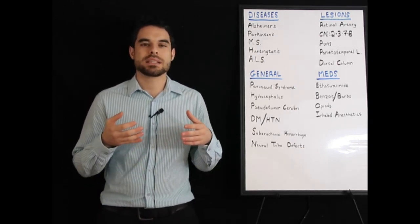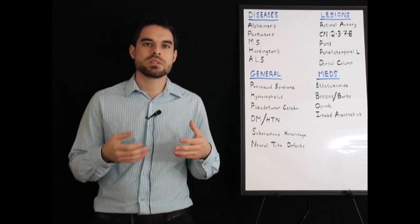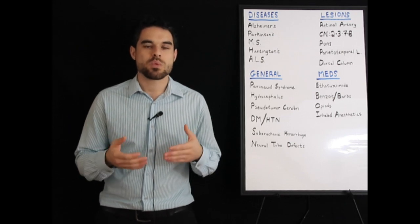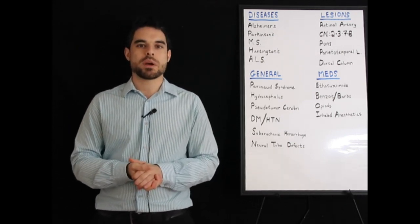They have less staining in the substantia nigra because they lose the dopaminergic neurons, those cells here. In my step, they ask, where is the substantia nigra? That's located in the midbrain.